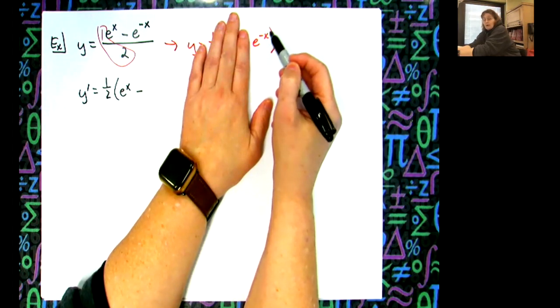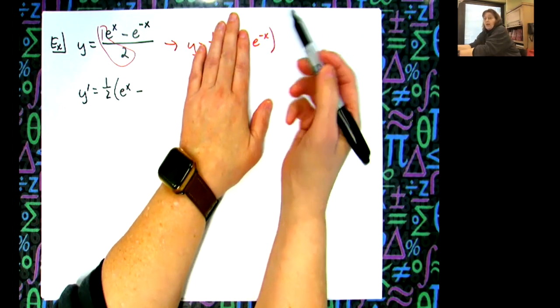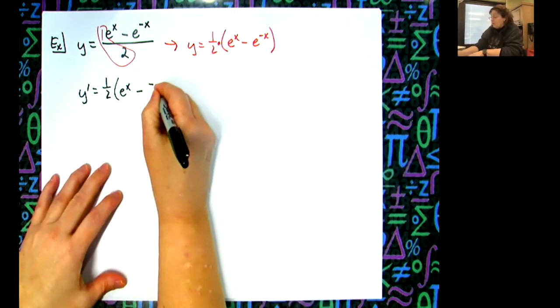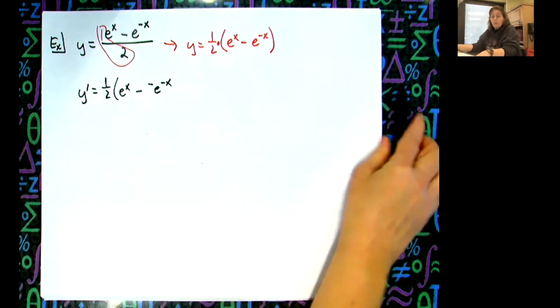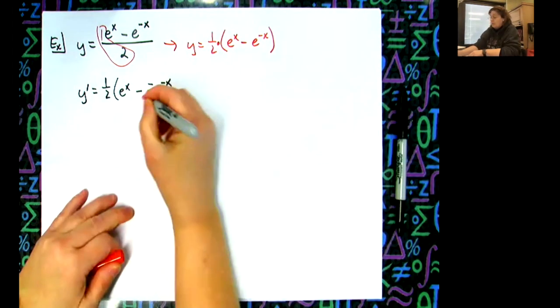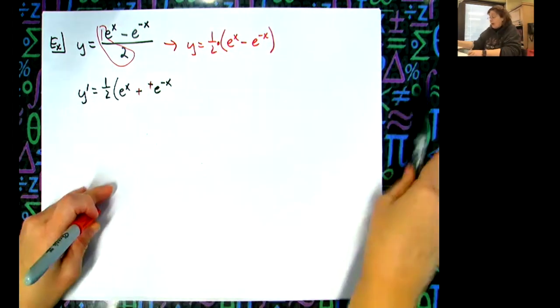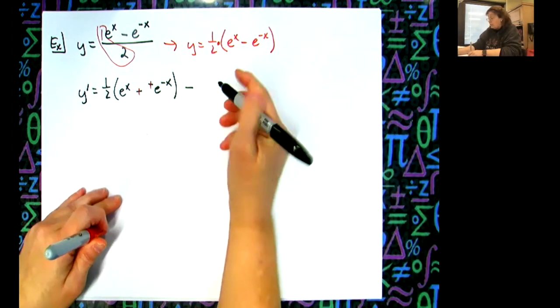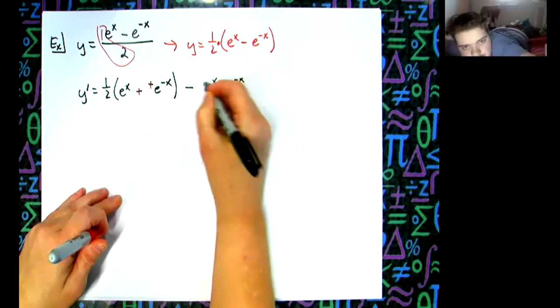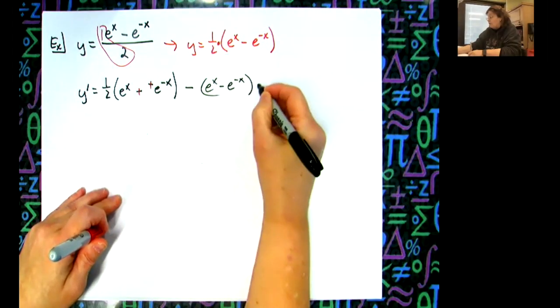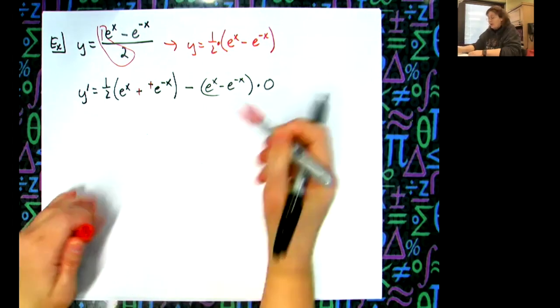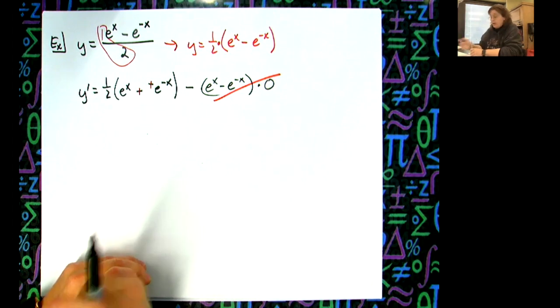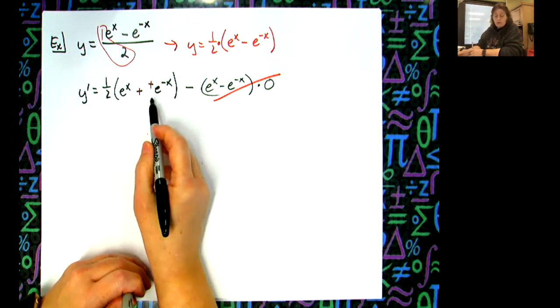The derivative of negative x is negative one, so it's negative e to the negative x, which really makes this a plus in here. Now if I finished out product rule, it would be the second term, e to the negative x, times the derivative of one half, which would be zero. See, that's why you don't really need to do the whole product rule - that's why it's constant multiplier rule.